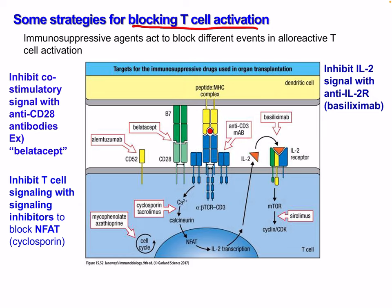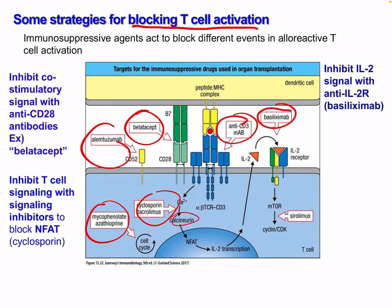Here are some strategies for blocking T cell activation, mainly to immunosuppress certain patients. There are many different intervention points. We talked about cyclosporine blocking calcineurin. Other examples include abatacept, which inhibits the co-stimulatory signal with anti-CD80 molecules; signaling inhibitors to block NFAT, which we talked about with cyclosporine; and inhibiting IL-2 signaling with anti-IL-2 antibodies like basiliximab.